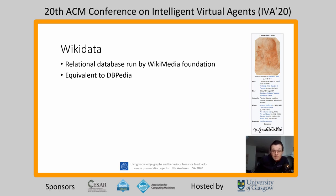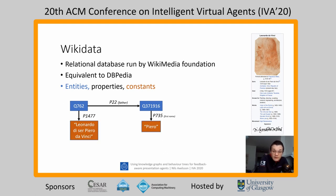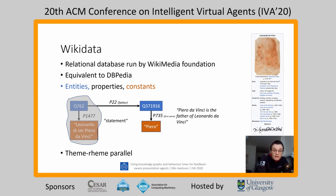Wikidata is the relational database we use to create our knowledge graphs. It is run by the Wikimedia Foundation and is equivalent to DBpedia — we arbitrarily used one over the other. In Wikidata, entities are connected by properties, and there is also a special case of entity called a constant, which may only appear as the target of a property. The triple of a source, a property, and a target is called a statement in Wikidata. For example, three statements together span the idea that Piero da Vinci is the father of Leonardo da Vinci. This triple concept maps to the idea of theme and ream in human dialogue — what are we talking about and what are we saying about it.